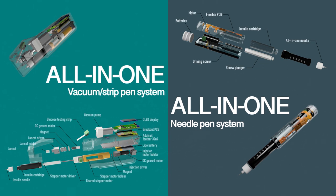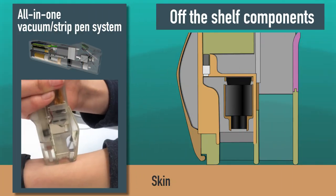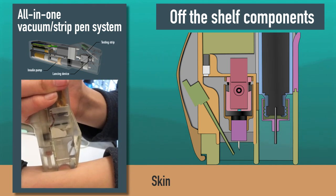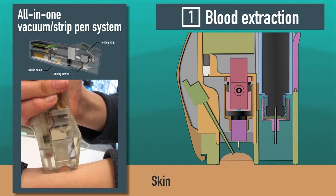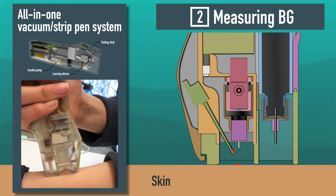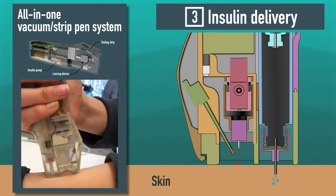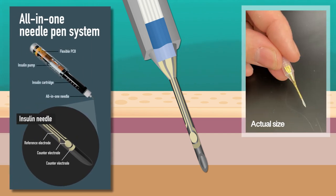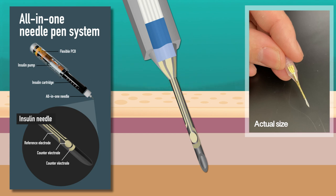To facilitate glucose measurement and insulin dosing, we developed two different types of all-in-one pens. The first system incorporates off-the-shelf components familiar to patients with diabetes into one device. This pen seamlessly integrates the lancing device and test strip for glucose measurement, as well as the insulin delivery needle, into a custom-designed vacuum-based insulin pen. The second system further simplifies by using an all-in-one system which integrates both glucose sensing and insulin injection into a single needle.